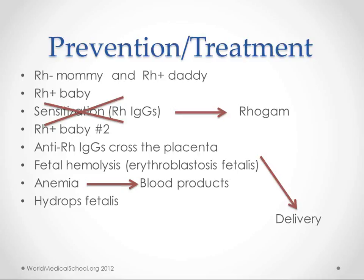If it does happen — if the mother is sensitized and there already are maternal IgGs floating around crossing the placenta — then our options are to try and deliver the baby before they progress to severe anemia and hydrops fetalis. And if we can't do that safely, meaning if the baby's lungs aren't matured enough yet, then we may have to treat the baby's anemia with blood transfusions, which can help keep the anemia under control and prevent hydrops fetalis.